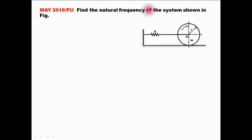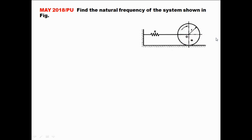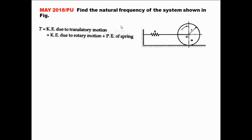Find the natural frequency of the system shown in the figure. This system consists of a rolling disc and a spring. The rolling disc is subjected to a clockwise moment or torque, so the disc will move towards right and the spring will be subjected to elongation. To solve this problem, I am going to use the energy method, not Newton's method. The energy method says the total energy of any system is constant.